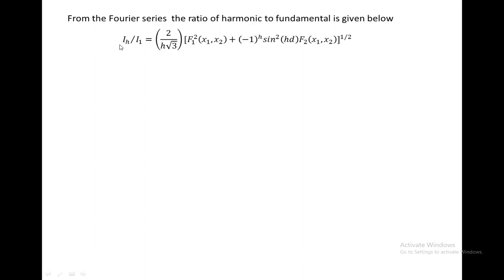If we write the Fourier series for the ratio of harmonic to fundamental current for the above waveform, it gives ih/i1 — harmonic current divided by fundamental current — equal to (2/h√3) · f1(x1, x2) · [±1]^h · sin(h·d) · f2(x1, x2)^(1/2). Here we find two functions: f1 and f2. h is the order of the harmonic and d is the distance between the centers of the positive and negative cycles as defined previously.